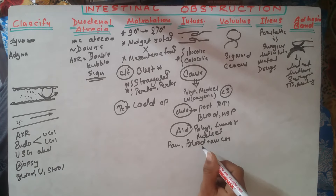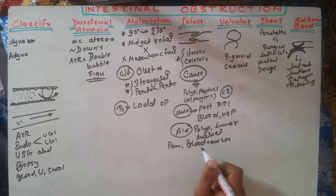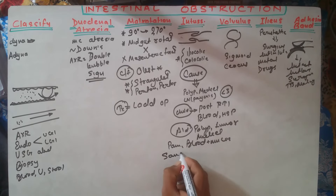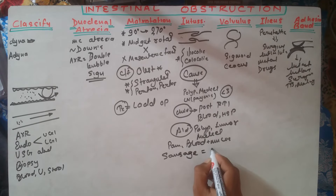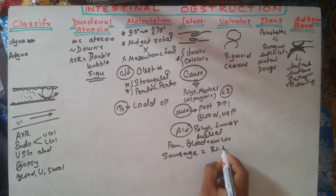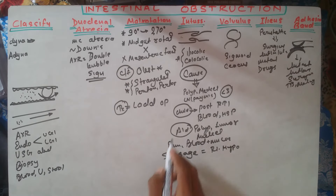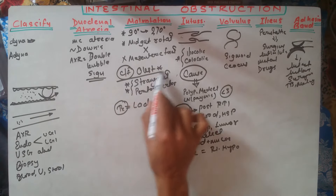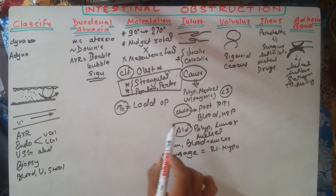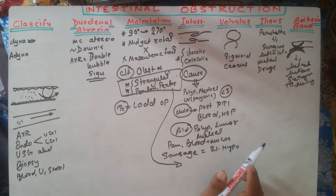On examination, the right hypochondrium will have a sausage-shaped mass — this is an important point. Complications that can also occur include strangulation, perforation, and peritonitis, similar to other obstructive conditions.